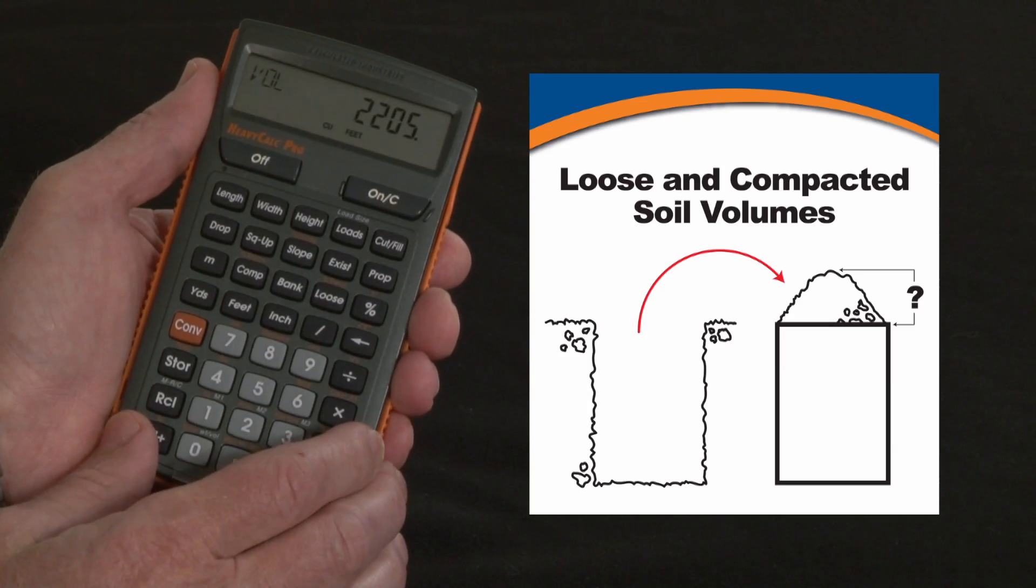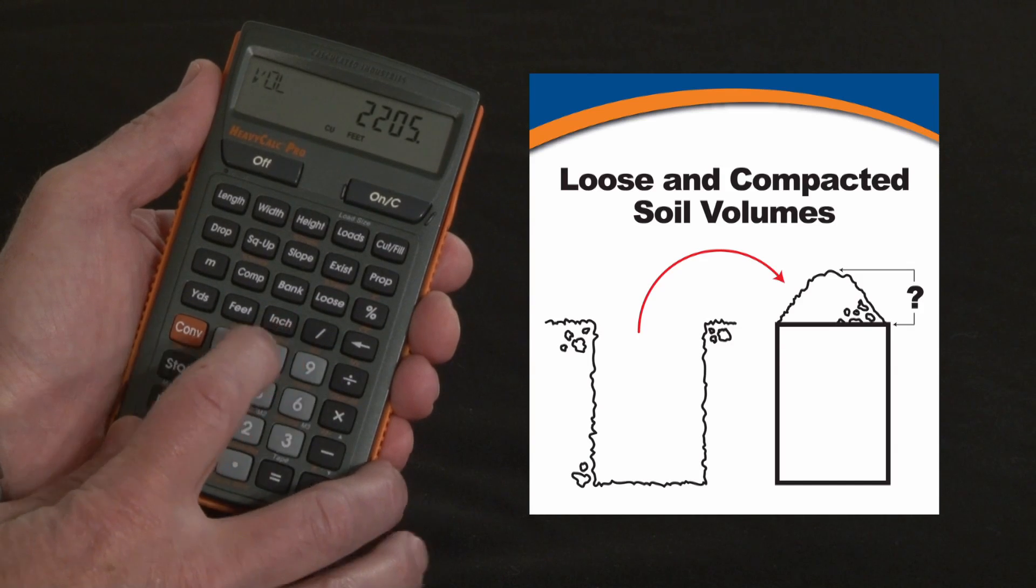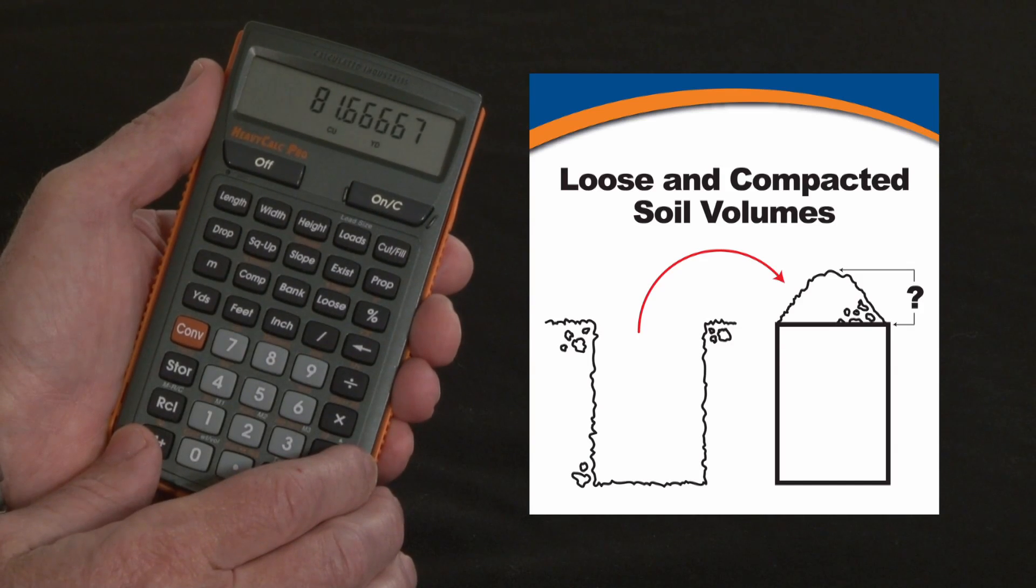First find the volume, 2,205 cubic feet. Let's convert that to yards, 81.6 cubic yards.